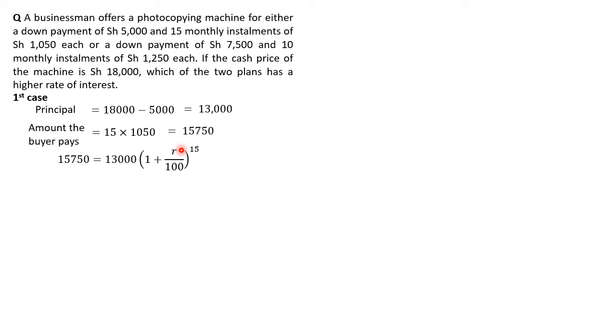We progress as follows. $13,000 is going to be our principal P, and $15,750 is going to be our A. R is what we're looking for, and 15 is the number of compounding times. So the first thing is we divide both sides by $13,000, so that we get $15,750 divided by $13,000 equals 1 plus R over 100, raised to the power of 15.